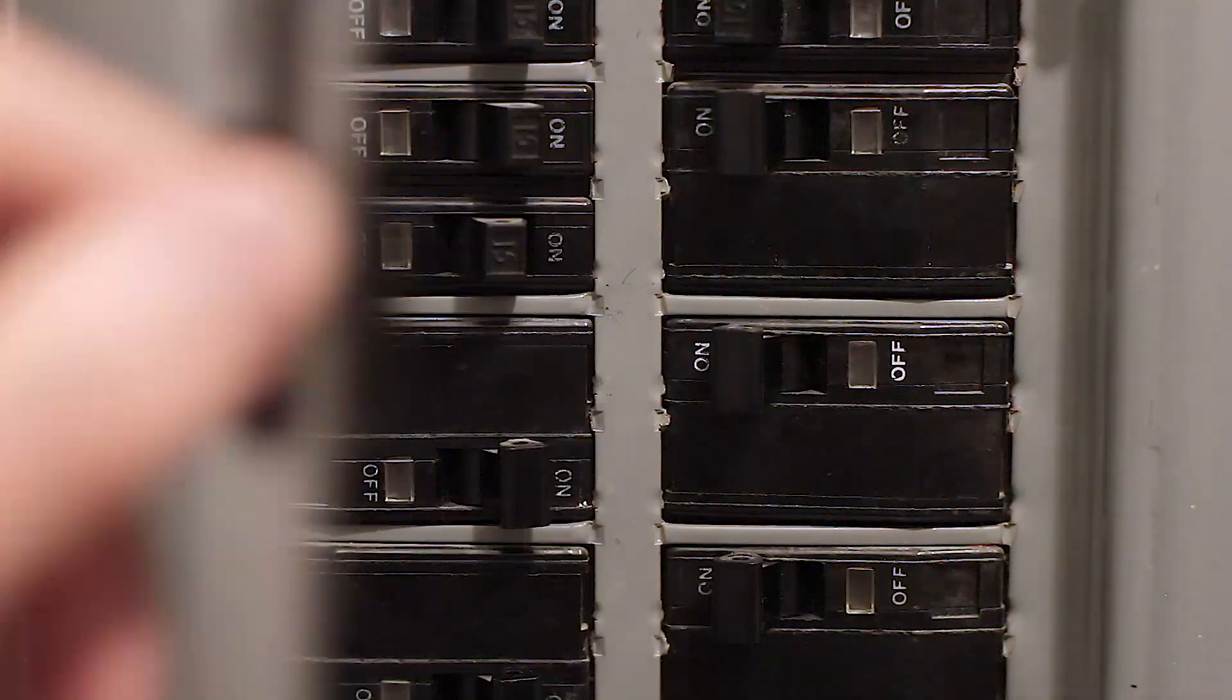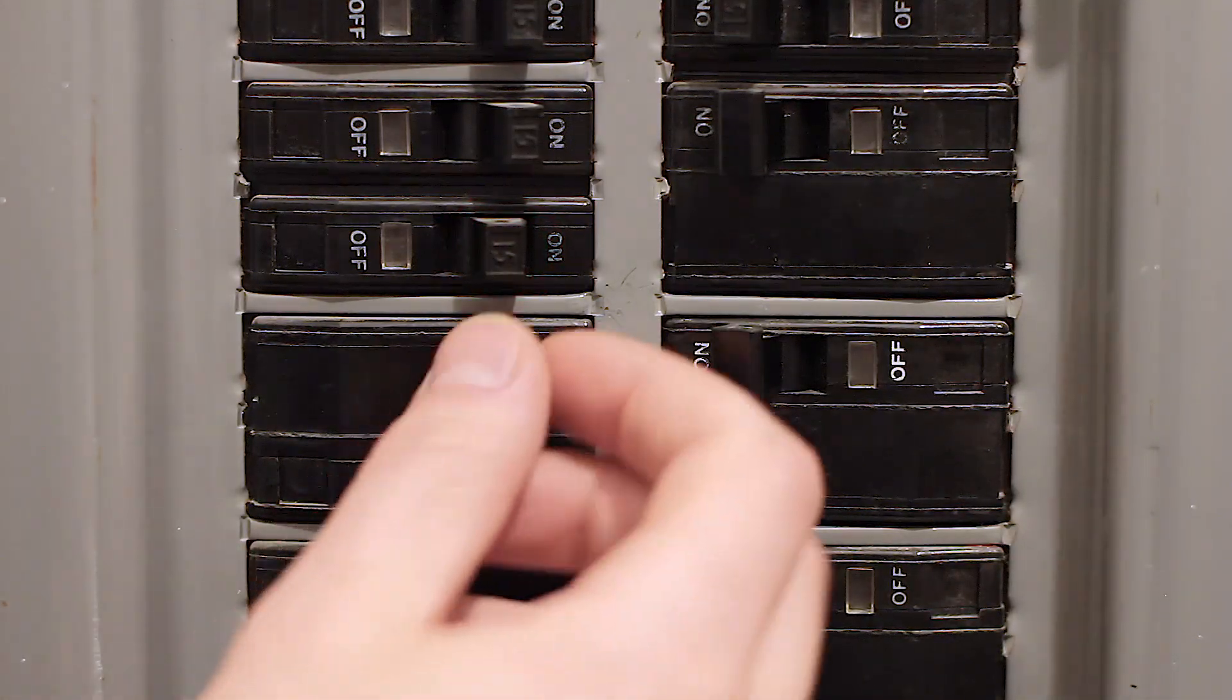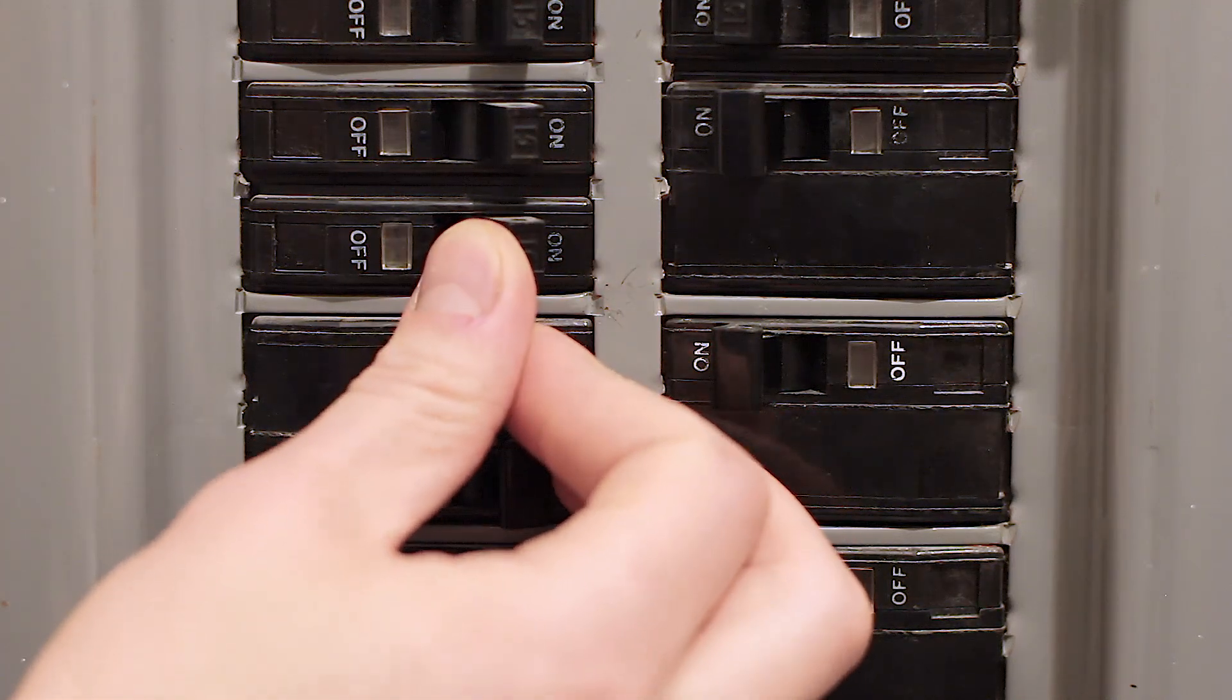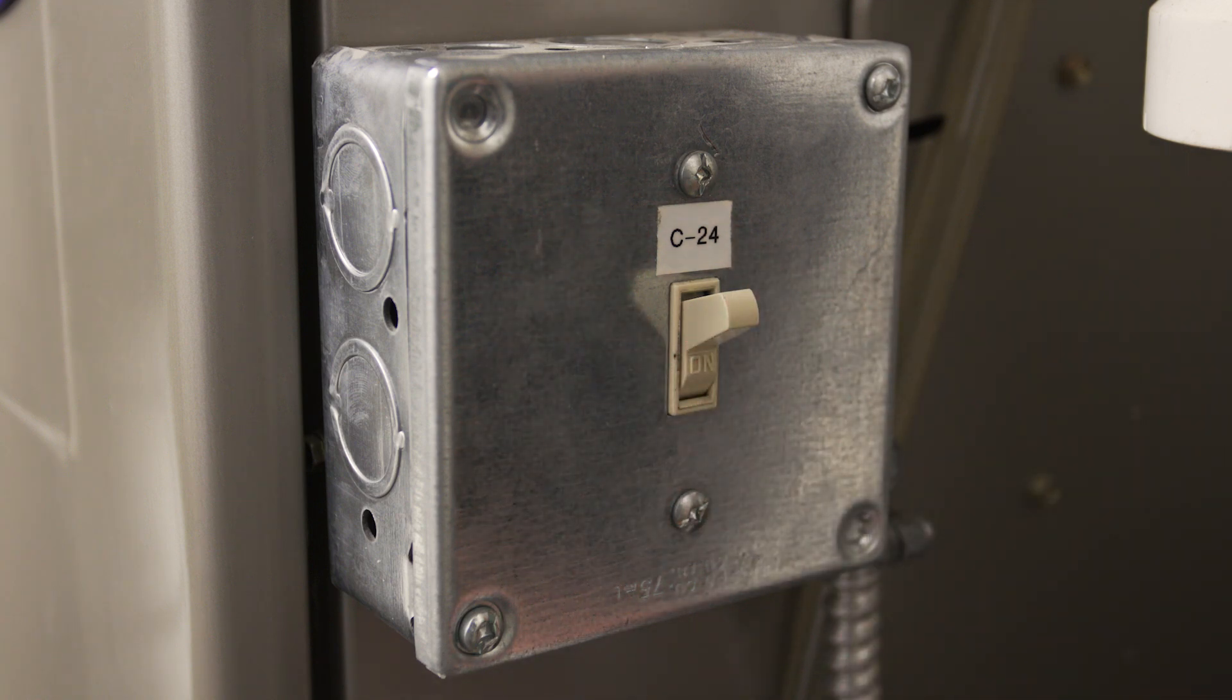Next check the breaker box. If the furnace breaker is tripped and in the middle position, then flip the breaker all the way off and then flip it on to reset the breaker. Locate the power switch on the side of the furnace and make sure that the switch is on.